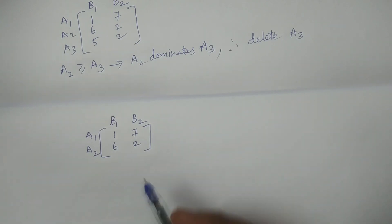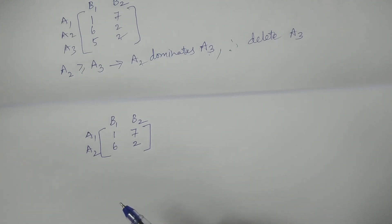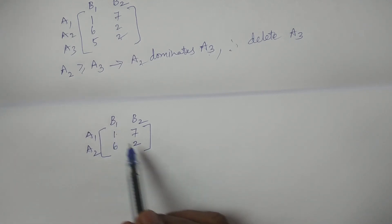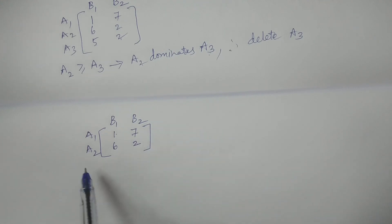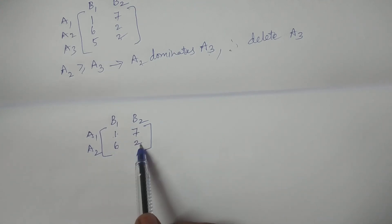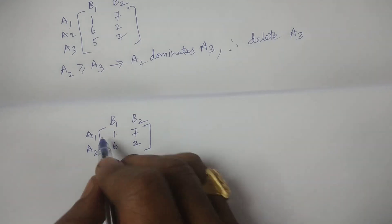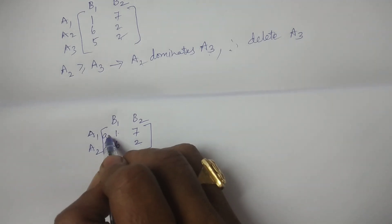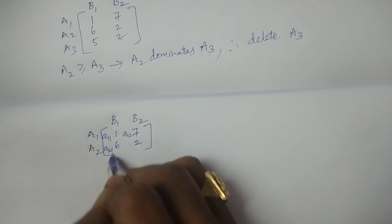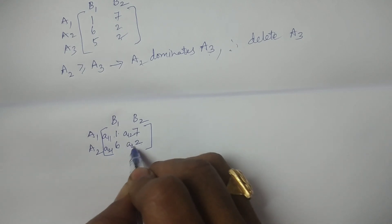Now you can check whether the dominance principle can still be applied. Comparing: 6 greater than 1, 2 less than 7 — no comparison. And 1 less than 7, 6 greater than 2 — no comparison. Therefore, we have to apply the formula for 2 by 2 rectangular games without saddle point.